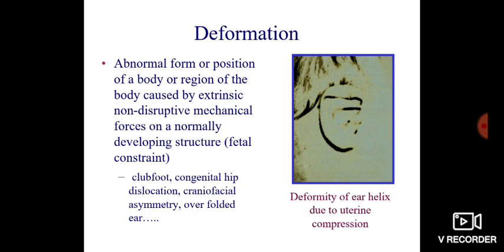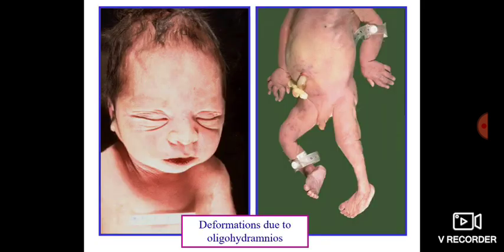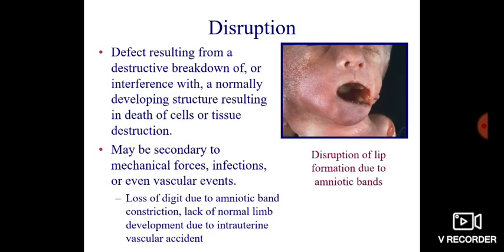This figure shows a deformity of the ear helix due to uterine compression. Deformation can also occur because of oligohydramnios, leading to pulmonary hypoplasia and postural deformities, as in renal dysplasia.